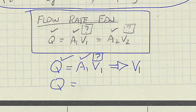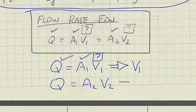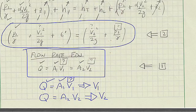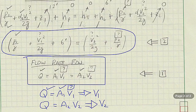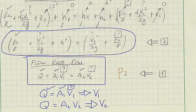Flow rate is equal to A2V2, and we can solve this equation for V2. So what I can see, I have three equations and I have three unknowns. My three unknown variables are the pressure at section 2, the velocity at section 1, and the velocity at section 2.